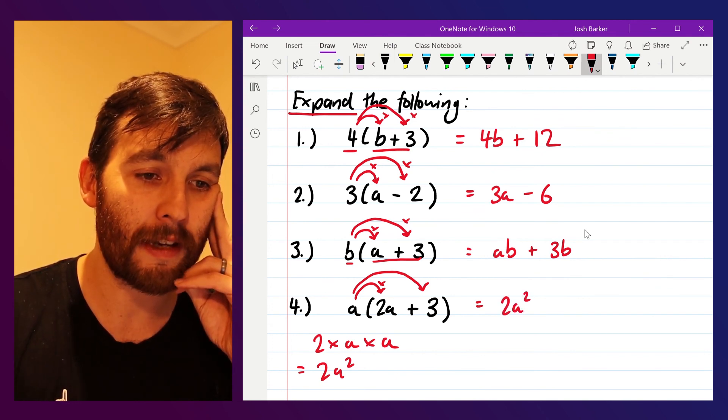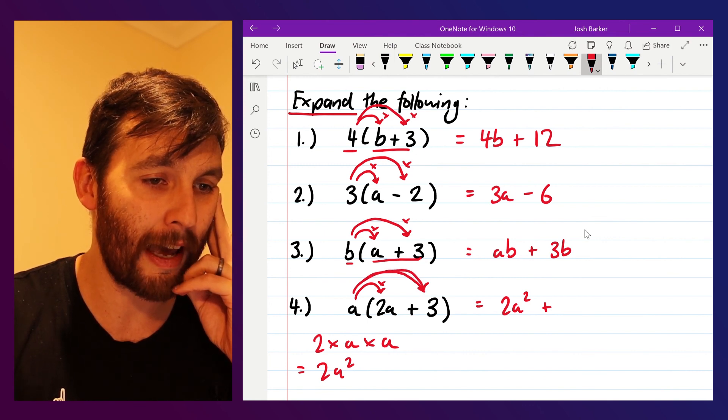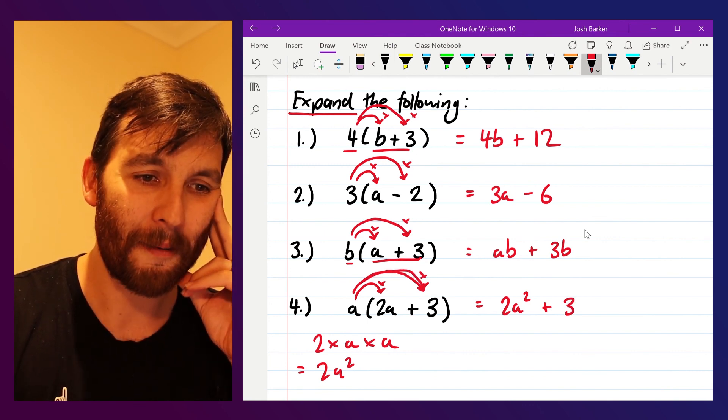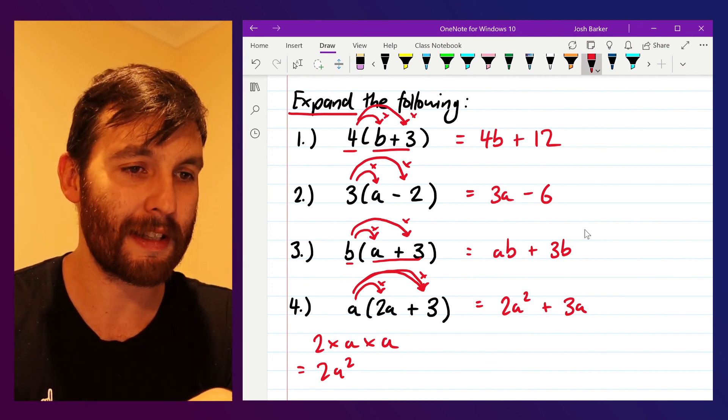So my first part here is two a squared, and I'm going to add on to that three multiplied by a, or a multiplied by three, which just gives us three a. So that was written the other way around, but the expression is pretty much the same.